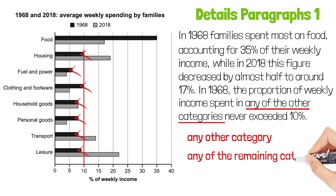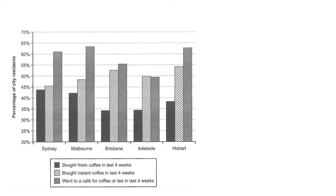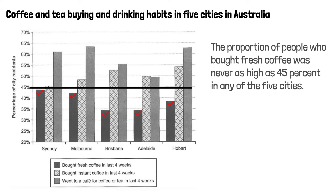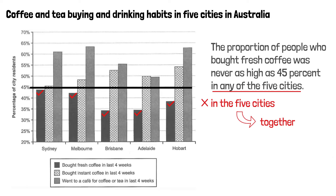Here's another example. This chart is about coffee and tea buying and drinking habits in five cities in Australia. The proportion in each city is lower than 45%. The right way to say this is: the proportion of people who bought fresh coffee was never as high as 45% in any of the five cities. We say 'in any of the five cities' — we don't say 'in the five cities' because it could be read as the percentage of people in the five cities who bought fresh coffee together was lower than 45%.